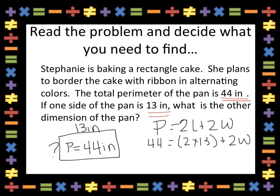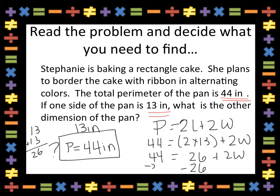If I don't know how to do 2 times 13, I can just add 13 and 13 and find 26. So 44, the perimeter, is 26 plus 2 times my missing side. I can subtract 26 from 44 to get my 2w. That gives me 18. That means 2 times something has to equal 18. I know from my multiplication facts that 2 times 9 is 18, making the width of my pan 9 inches.